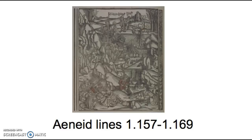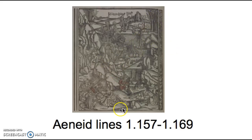Welcome to the screencast for Aeneid Book 1, lines 157 through 869. In this scene, the Trojans who have just gone through the big storm are worn out. They're going to make landfall, find a safe harbor, and this scene basically describes them getting there and what they see. This right here is a little woodcut that shows the scene of the Trojans' landing.